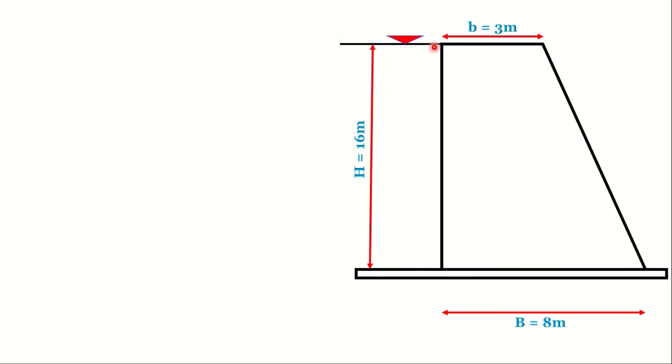For the horizontal pressure P and the gravity force W, we need to find the resultant pressure. The distance of the center of gravity from the base is H/3, where H is the height, so the distance is 16/3.